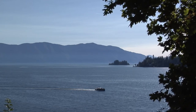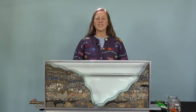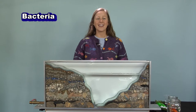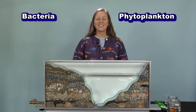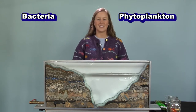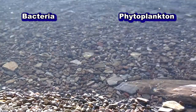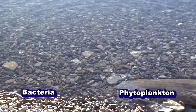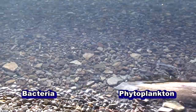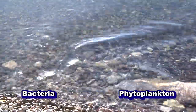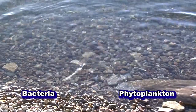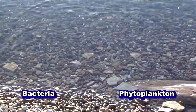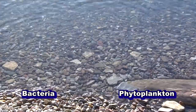First, let's begin with the smallest and some of the most important organisms in lake ecosystems: bacteria and phytoplankton. These two tiny organisms are the first living things to inhabit a lake ecosystem. They have a huge impact on the health of the lake, but are only visible beneath a microscope. A cup of lake water holds hundreds, if not thousands, of bacteria and phytoplankton. We just can't see them with our naked eye.